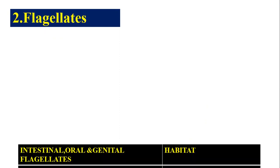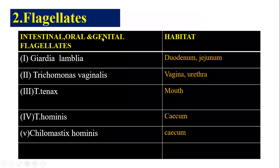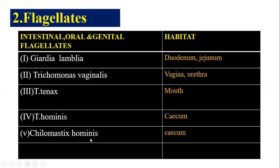The second branch is flagellates. According to their habitat, the flagellates are intestinal, oral, and genital. Giardia lamblia is present in the duodenum and jejunum. Trichomonas vaginalis is present in the vagina and urethra. Trichomonas tenax is present in the mouth. Trichomonas hominis is present in the cecum. Chilomastix mesnili is also present in the cecum. Intestinal flagellates include Giardia, and genital flagellates include Trichomonas vaginalis.